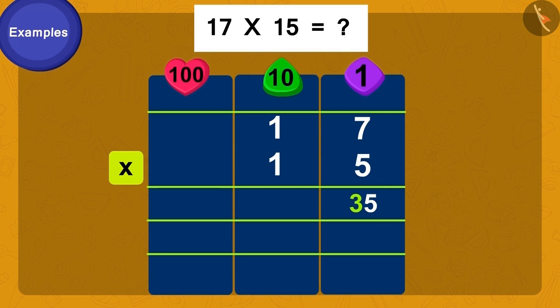So what shall we do now? We will use carryover to write 3 of 35 as a carryover and write the 5 in units place like this.